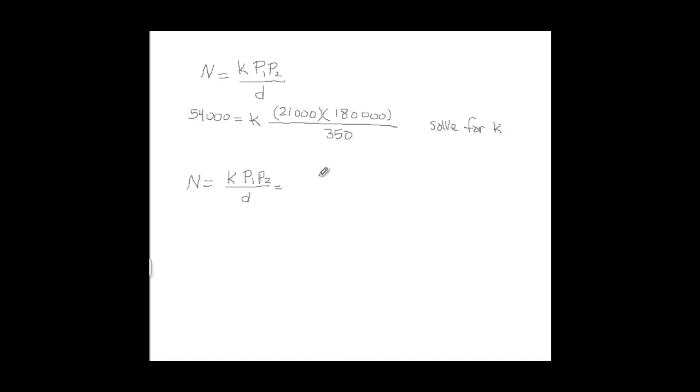So we want to know what n is, the number of calls. Now we know what k is, so whatever k is, we just substitute here. That would be the value of k. And then now we want to know n when the distance is 465 and p1 is 70,000, p2 is 150,000. And then you just simply solve for n here.